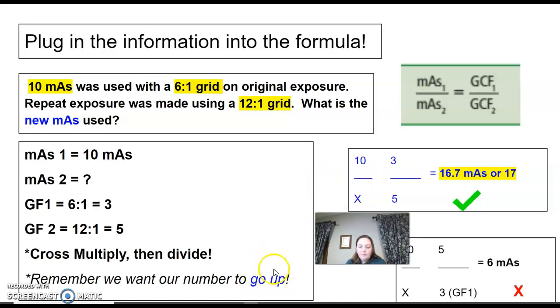All you're going to do is cross multiply and divide. Just remember, our number has to go up. If your number goes down, you're putting your numbers in the wrong places. So 10 was our original, and 5 is our grid factor 2. We're going to cross multiply 10 times 5 and divide it by 3, which gives me 16.7 mAs or 17 mAs is your new mAs.